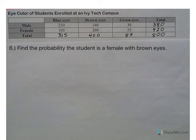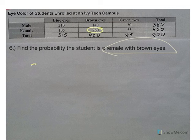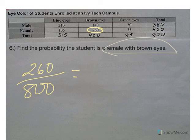Number six: find the probability a student is female with brown eyes. Female with brown eyes is 260 out of 800, which gives 0.325.